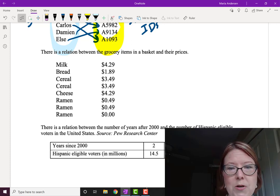So for example, milk rings up for $4.29, bread for $1.89. You have two boxes of cereal, each one rings up for $3.49. We have cheese, which rings up for $4.29.